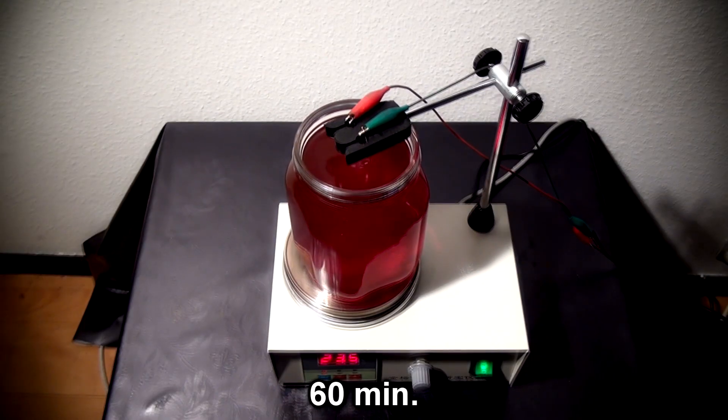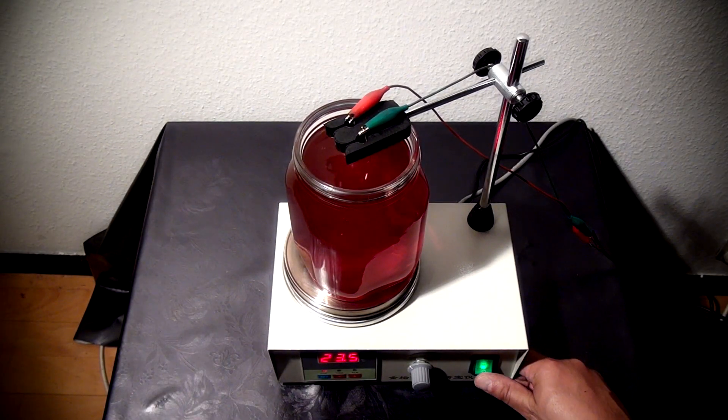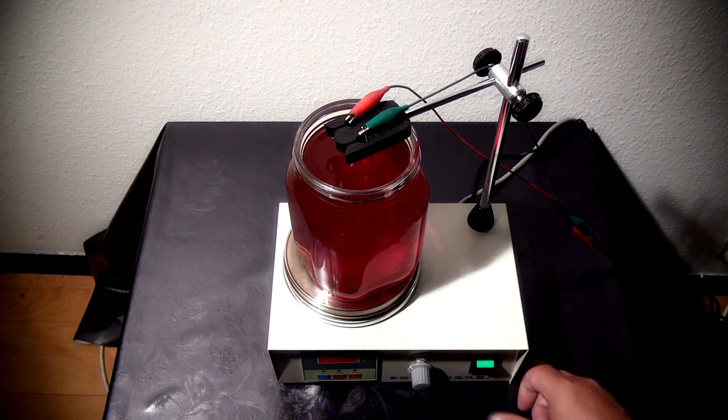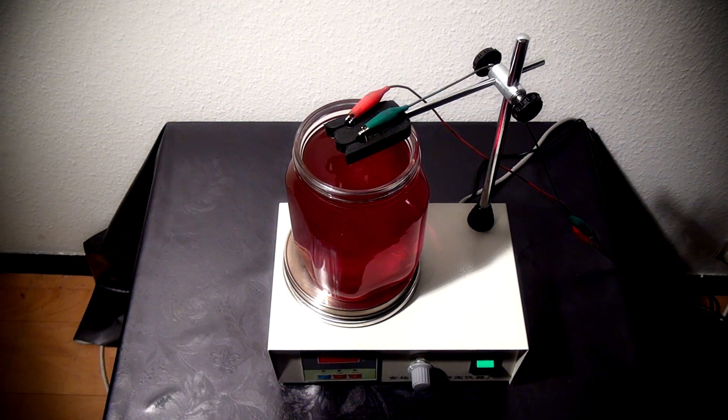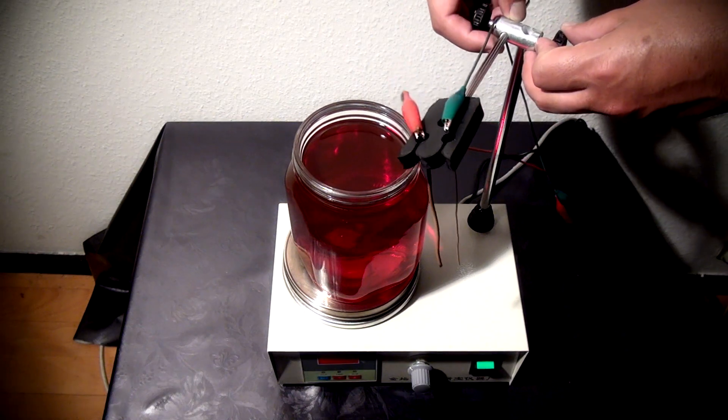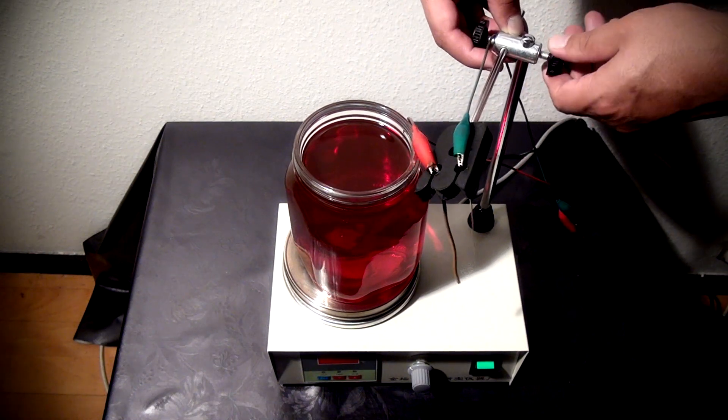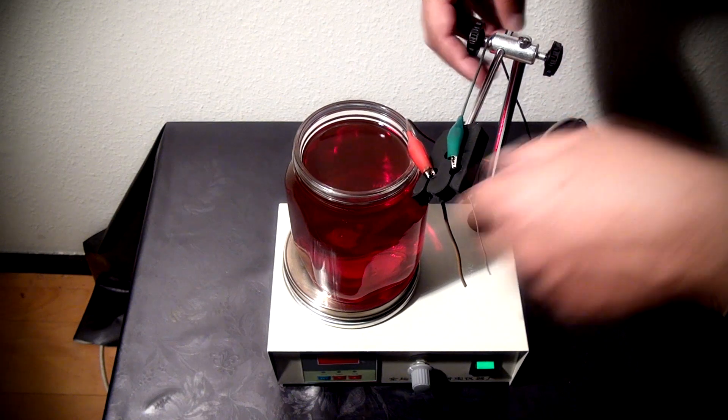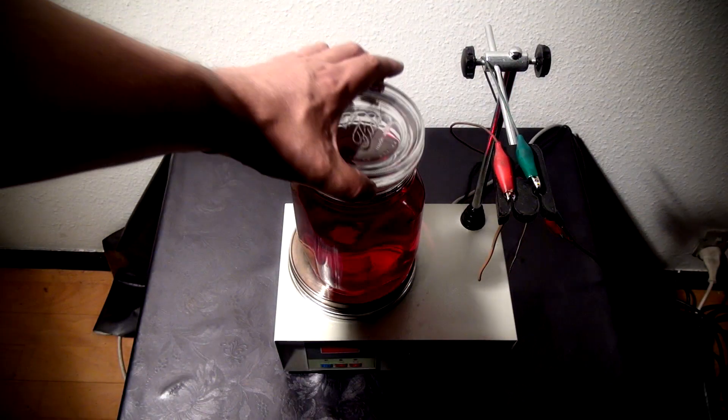I turn off the device, and my 24 karat gold and copper electrodes have done their work. The ruby red color indicates the best concentration and gold ion size in relation to the body cells.